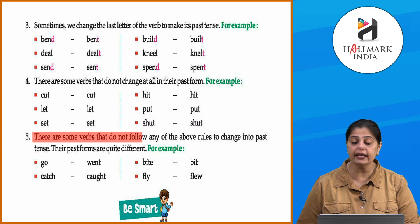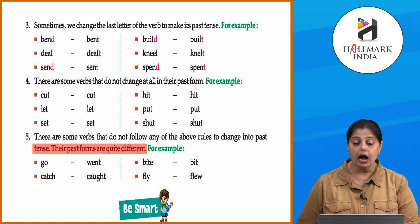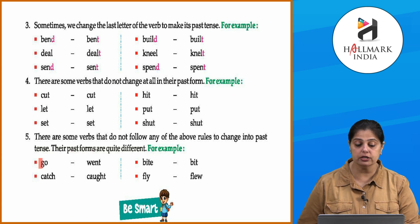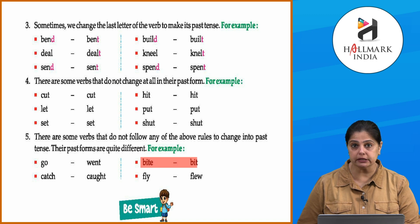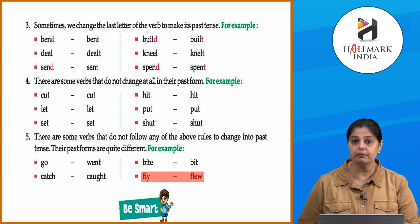There are some verbs that do not follow any of the above rules to change into past tense — their past forms are quite different. For example: go → went, bite → bit, catch → caught, fly → flew. These irregular verbs we simply use as they are.